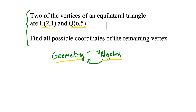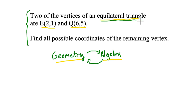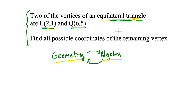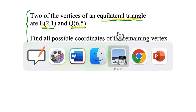Okay, so you had a chance to think about it. I'm noticing we've got an equilateral triangle, and we're given two of the vertices, E and Q. What do I know about equilateral triangles? That means every side length is the same, so maybe there's something here about the distance formula. I've got two of the points already, and they want us to find all possible coordinates of the remaining vertex — so there could be more than one answer.